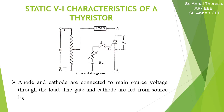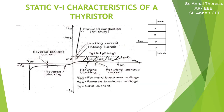cathode to the negative through the load. Also, the gate signal is given to the gate by the source ES between the gate and cathode terminals. There are three modes of operations: reverse blocking mode, forward blocking mode, and forward conduction mode.